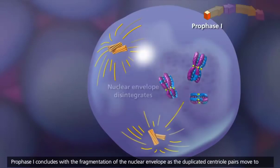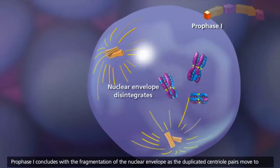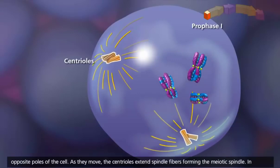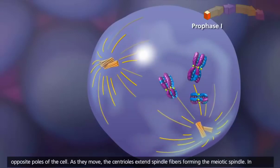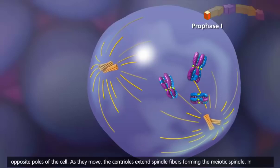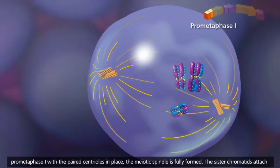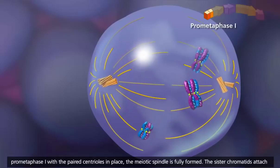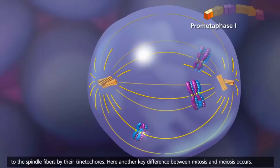Prophase I concludes with the fragmentation of the nuclear envelope as the duplicated centriole pairs move to opposite poles of the cell. As they move, the centrioles extend spindle fibers, forming the meiotic spindle. In prometaphase I, with the paired centrioles in place, the meiotic spindle is fully formed. The sister chromatids attach to the spindle fibers by their kinetochores.